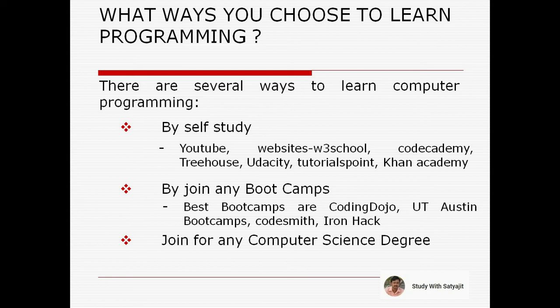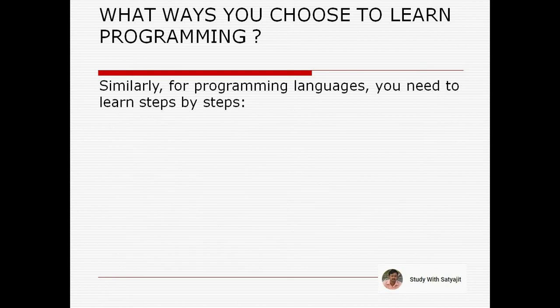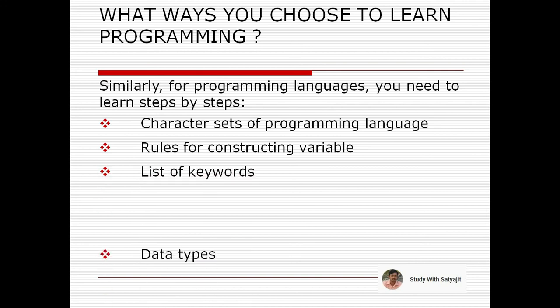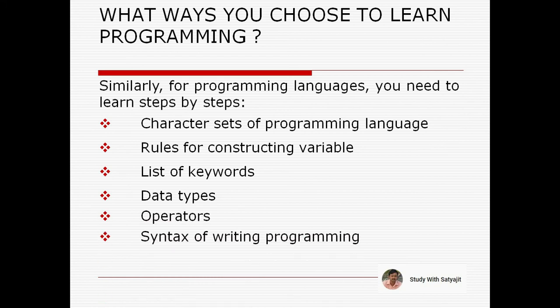When learning a natural language, you follow steps such as: first learning alphabets, then words, then sentences, rules of grammar, and vocabulary. Similarly, for programming languages you need to learn step by step: character sets of programming languages, rules for constructing variables, list of keywords and methods, data types, operators, syntax of writing programs, and library functions.